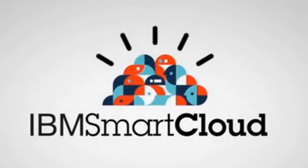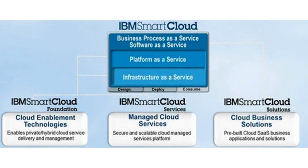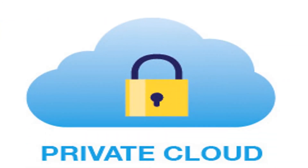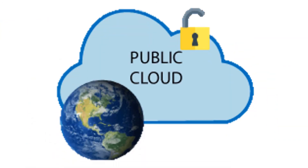The IBM Smart Cloud brand includes Infrastructure as a Service, Software as a Service, and Platform as a Service, offered through public, private, and hybrid cloud delivery models. IBM places these offerings under three main areas: Smart Cloud Foundation, Smart Cloud Services, and Smart Cloud Solutions.